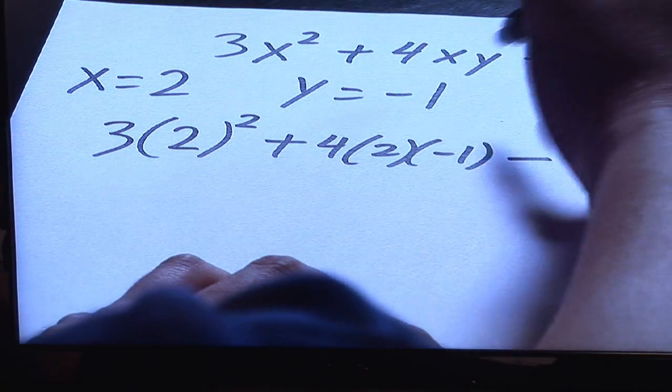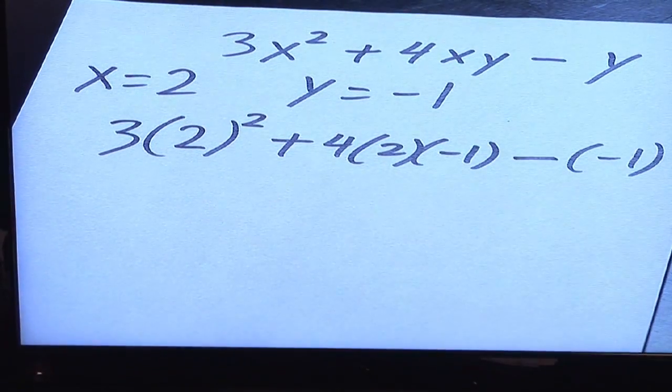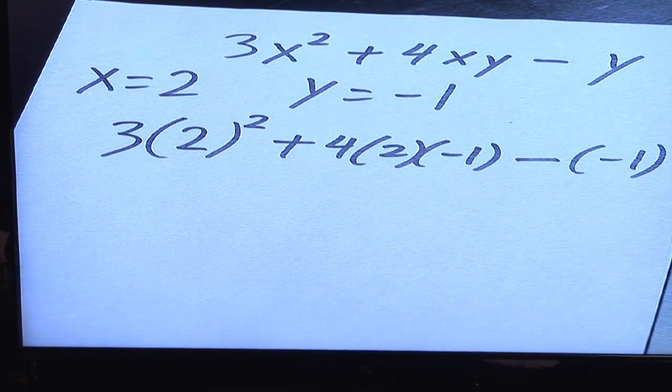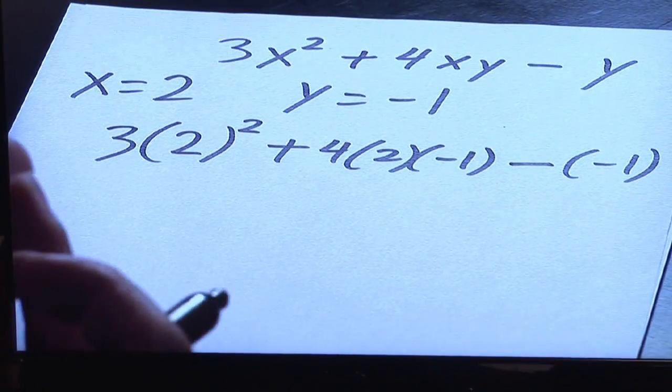Minus, and then the y you know is negative 1. Now, you let your operations do the job for you. The important thing is, as long as you know the order of operations, you're going to be okay.